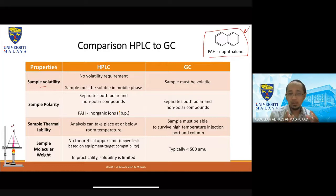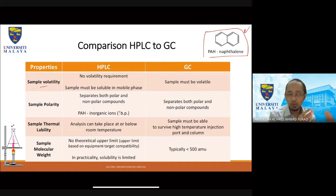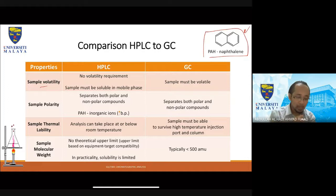In terms of thermal liability, HPLC can handle thermally unstable or thermally decomposing samples. The system can work at reduced temperatures — the sample collector can be set close to one or two degrees Celsius depending on your module. Some HPLC systems can also work at around 20 degrees Celsius or room temperature. For GC, because you need to heat the sample, thermally labile samples are out of the picture.